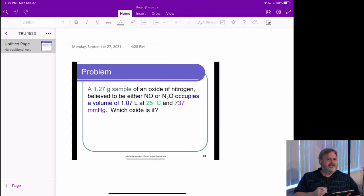We've got a 1.27 gram sample of an oxide of nitrogen. We're told it's either nitric oxide or dinitrogen oxide. Those are going to have different molar masses because of their formula.